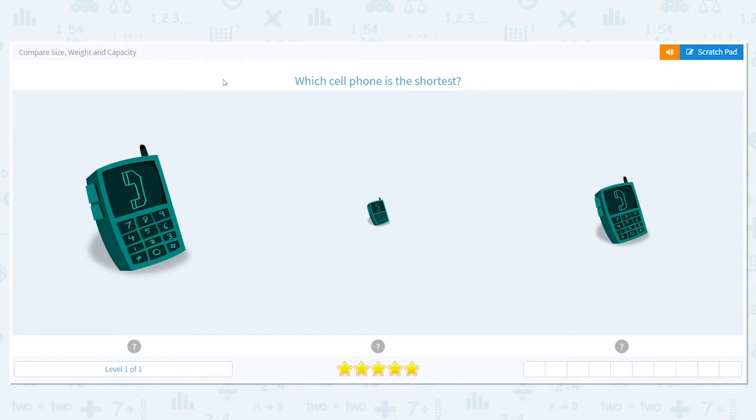Which cell phone is the shortest? When I think of shortest or tallest, I like to think of Goldilocks and the Three Bears, especially those three bears. We have the Mama Bear, the Papa Bear, the Baby Bear. Papa Bear is the biggest.